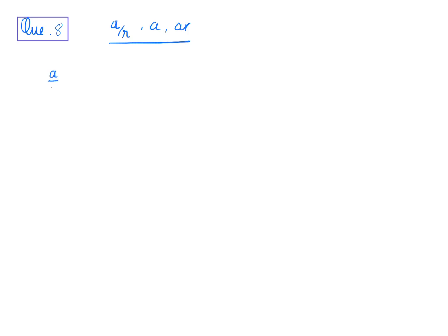We have product = -64, so we can write: (a/r) × a × (a·r) = -64. The r terms cancel out, so a³ = -64, which gives us a = -4.